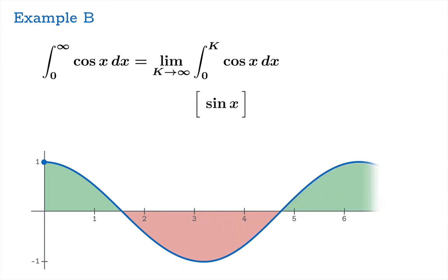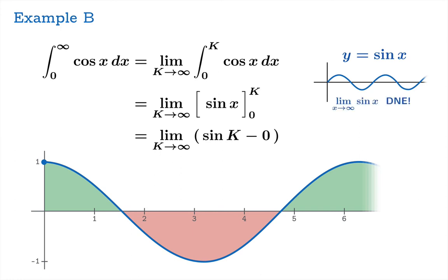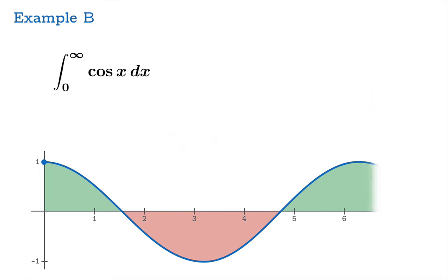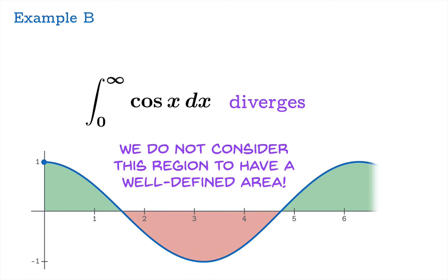Playing the game officially: the antiderivative of cosine is sine. Plug in k, plug in 0, evaluate, and subtract. Then take the limit as k goes to infinity — giving the limiting value of sine(k) as k goes to infinity. But sine oscillates on its whole domain; the limit of sin(x) as x goes to infinity does not exist. The value bounces back and forth between negative one and one and never settles down. So the limit doesn't exist, and this improper integral diverges — not to infinity or negative infinity, just flat out diverges. We don't assign an area to this region.